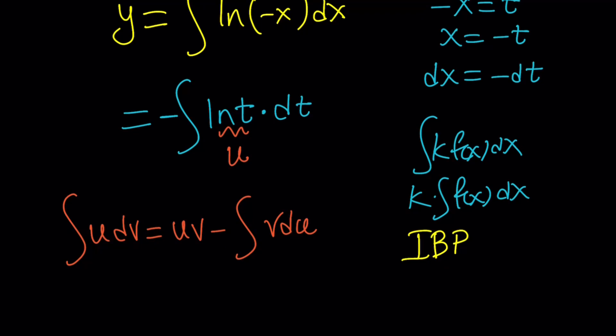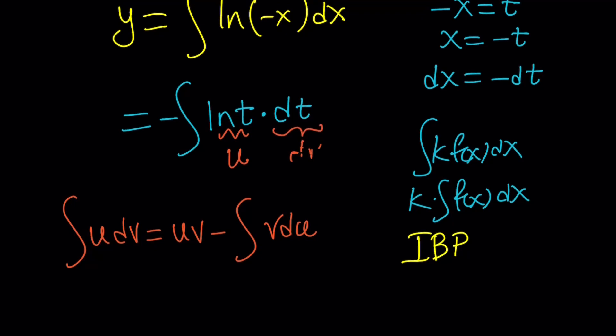And when you call something U, the rest is DV. Make sense? So that's kind of easier once you find U. So now, this is DV. And let's go ahead and use the rule.